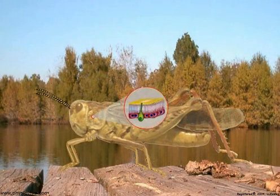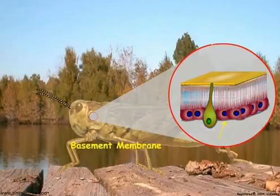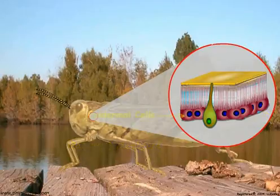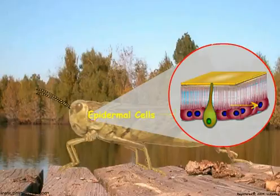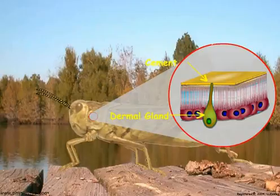This cutaway view shows that the integument consists of a series of layers. The integument is separated from the hemolymph by the basement membrane, a connective tissue layer comprised of glycosaminoglycans and proteins similar to collagen. The epidermal cells are the living part of the integument. They form a monolayer below the cuticle and secrete the overlying structural layers, with the exception of the cement layer, which is a product of the dermal glands.